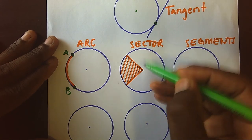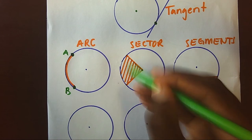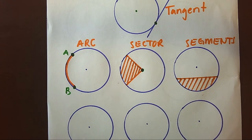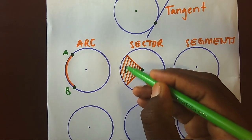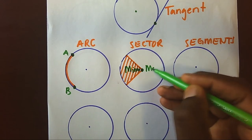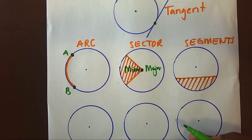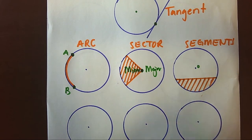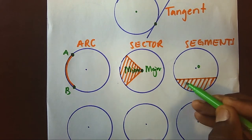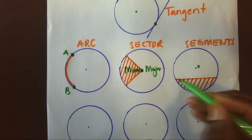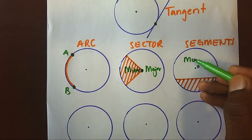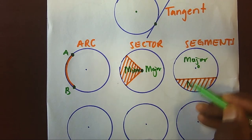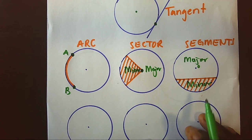A sector is a portion of the circle based from the center. We have the minor and the major sector. We also have a segment. A segment is created using the curve. We have the major segment and the minor segment.